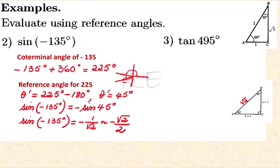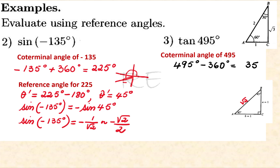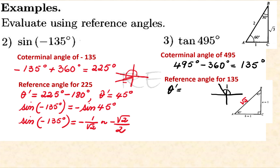We're going to look for the coterminal angle of 495. We subtract 360 because it has more than one revolution: 495 minus 360, and we get 135 degrees. We're going to look for the reference angle for 135 degrees. Since 135 is a second quadrant angle, its reference angle is equal to 180 minus 135, so theta prime is equal to 45 degrees.